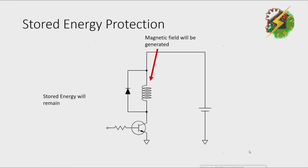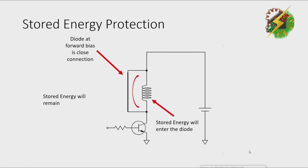The stored energy will remain. And the diode at forward bias is closed connection. The stored energy will enter the diode instead of entering it to the collector.